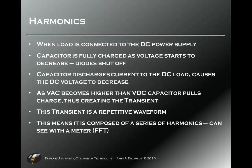So where does this come from? When a load is connected to the DC power supply, the capacitor gets fully charged; as the voltage starts to decrease, the diodes shut off. The capacitor then discharges current to the DC load and the DC voltage decreases. As VAC swings back to the positive, it becomes higher than the DC voltage, the capacitor pulls in charge and creates a transient. That transient becomes a repetitive function — every 60 hertz. That repetitiveness means there are harmonics, and we can see the series of harmonics with an FFT meter, or do the math as discussed in Lecture 4A.